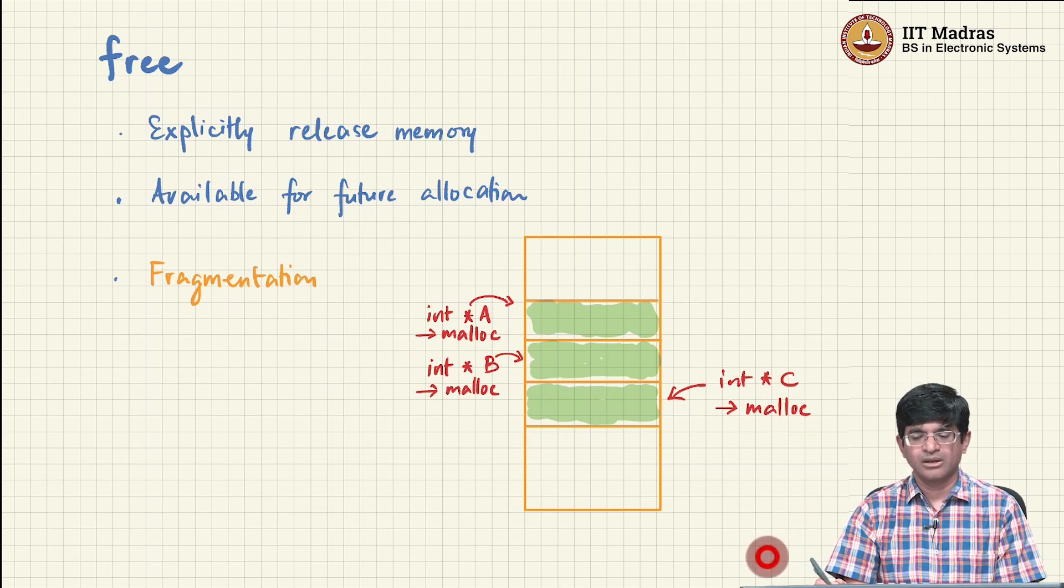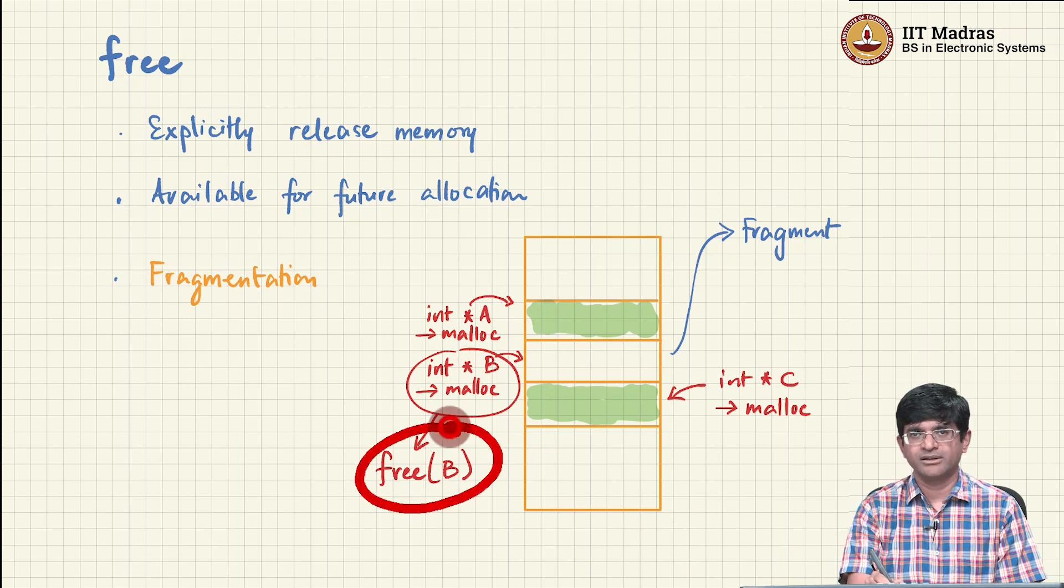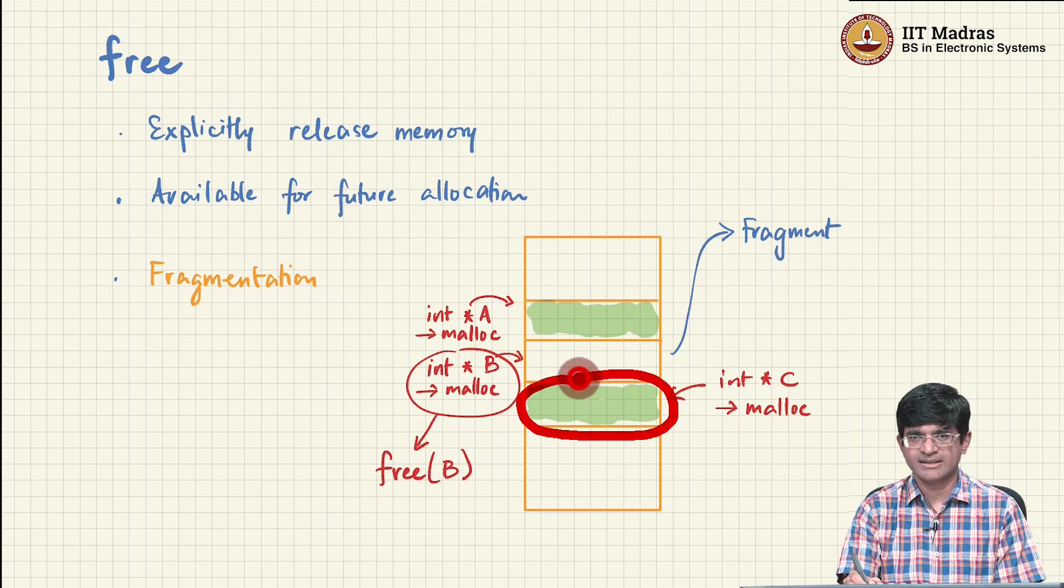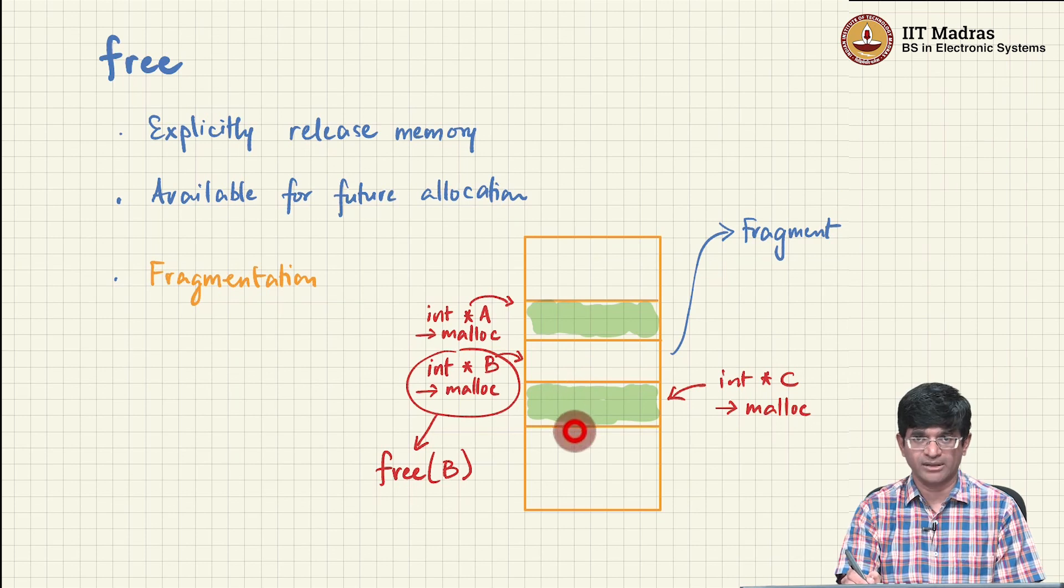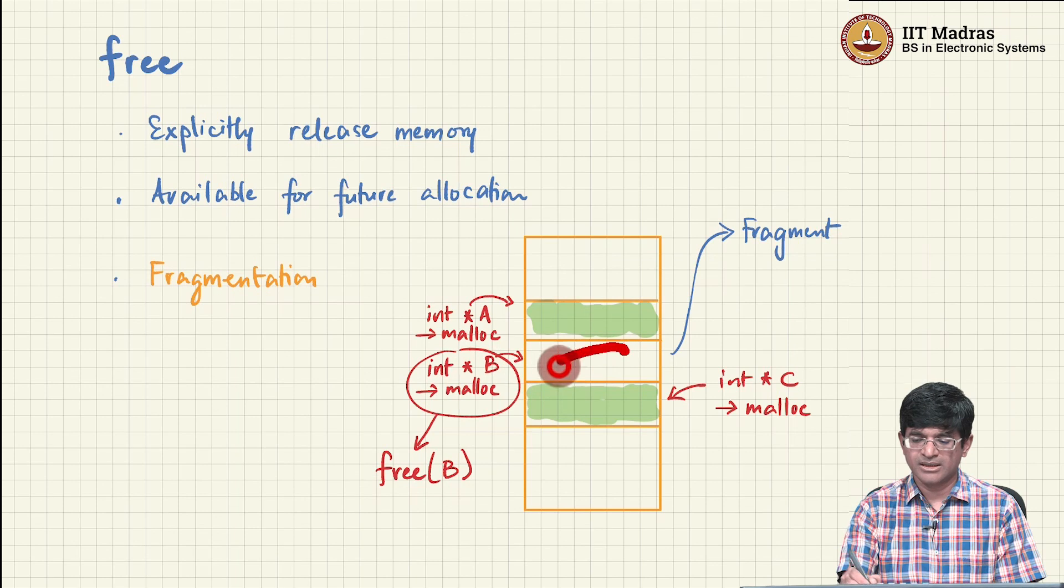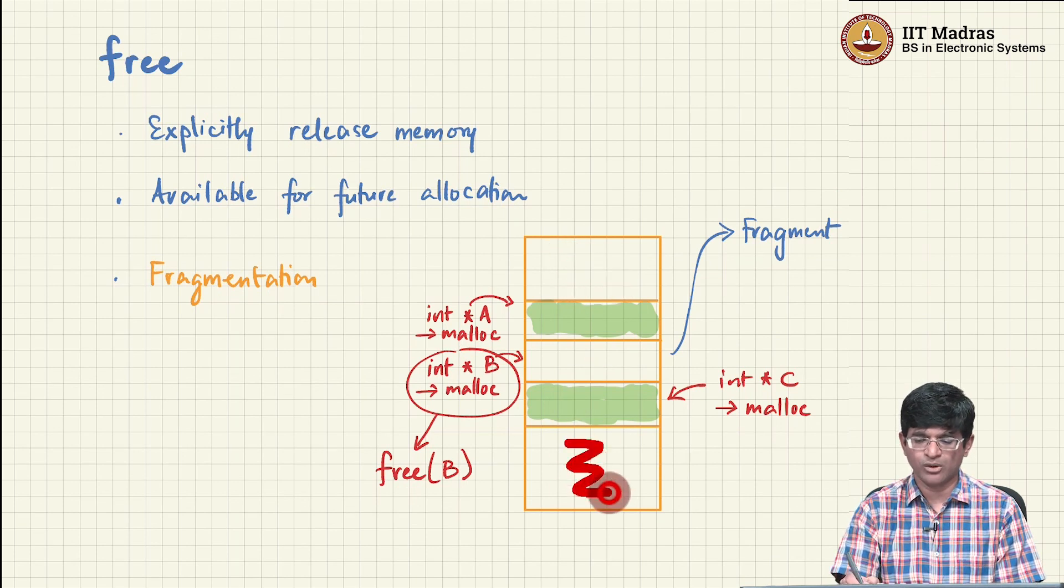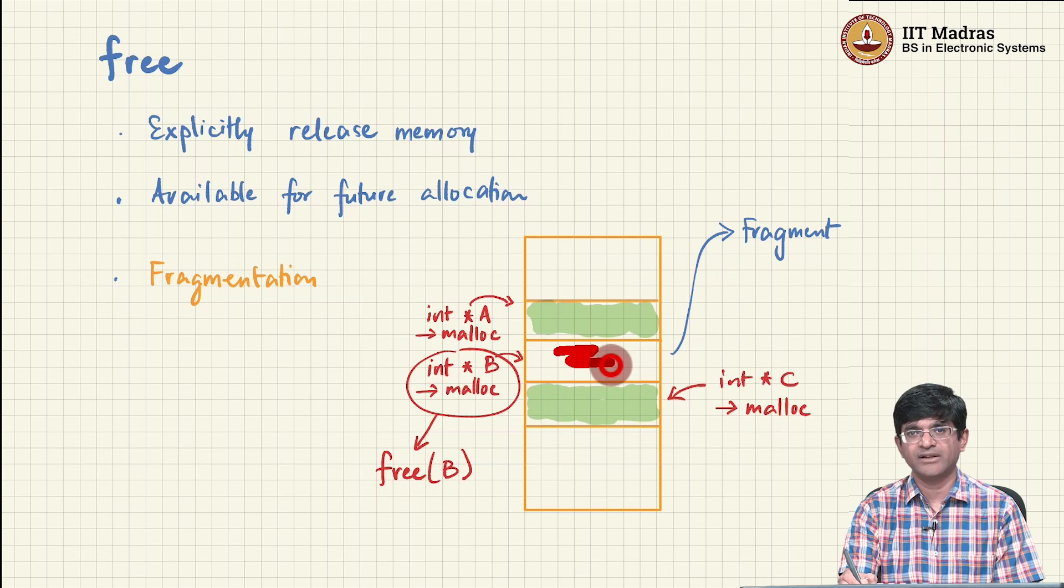But now, this is where things get tricky. What if I go ahead and free the pointer b? What has happened is this chunk of memory corresponding to a remains where it is, this chunk of memory corresponding to c remains where it is. I do not automatically move it around because moving it around would actually be problematic. What ends up happening instead is this section of memory is now actually free. But my memory has now got fragmented. I have some memory out here, I have some memory down here. And somewhere in the middle, I again have a chunk of memory that is free.